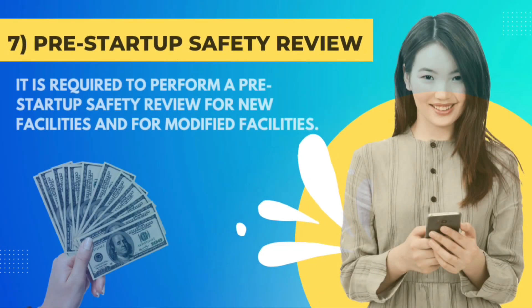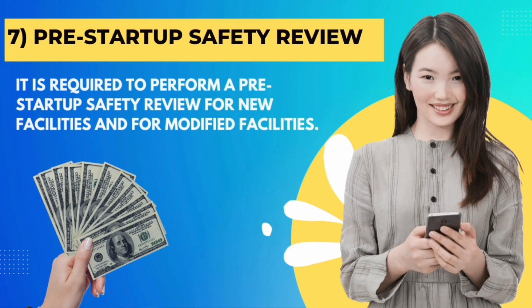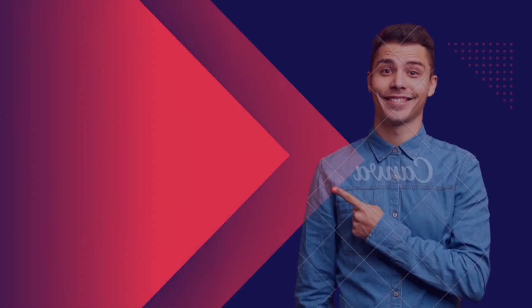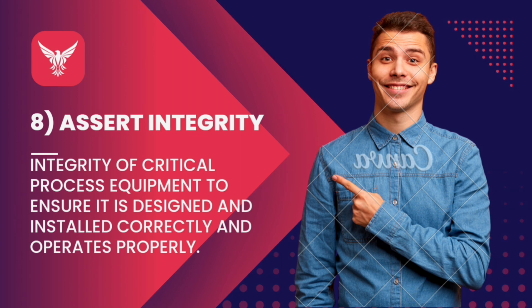Element 8 is asset integrity. We identify critical process equipment, which is called healthiness and asset integrity. That means maintaining healthiness and asset integrity — like proper spacing, company equipment, or proper thicknesses of lines.